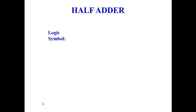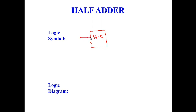The logic symbol of the half adder is a block labeled 'Half Adder' with two inputs A and B, and two outputs: Sum (S) and Carry. So we have two inputs and two outputs.